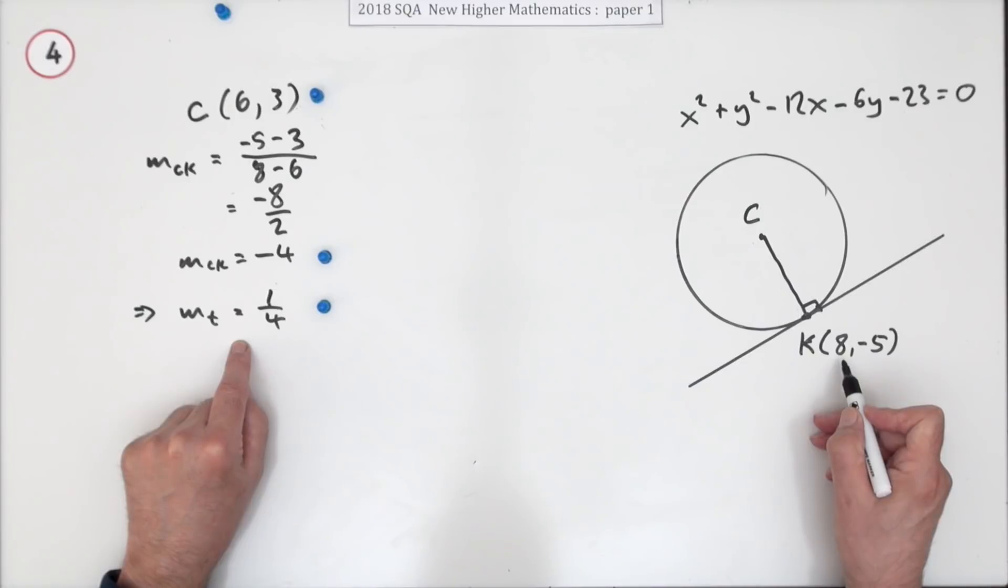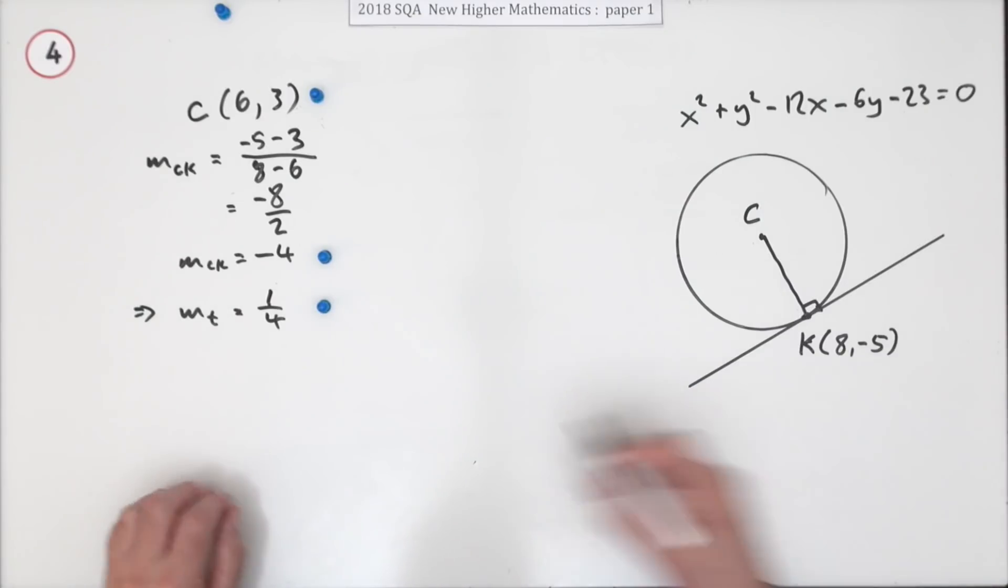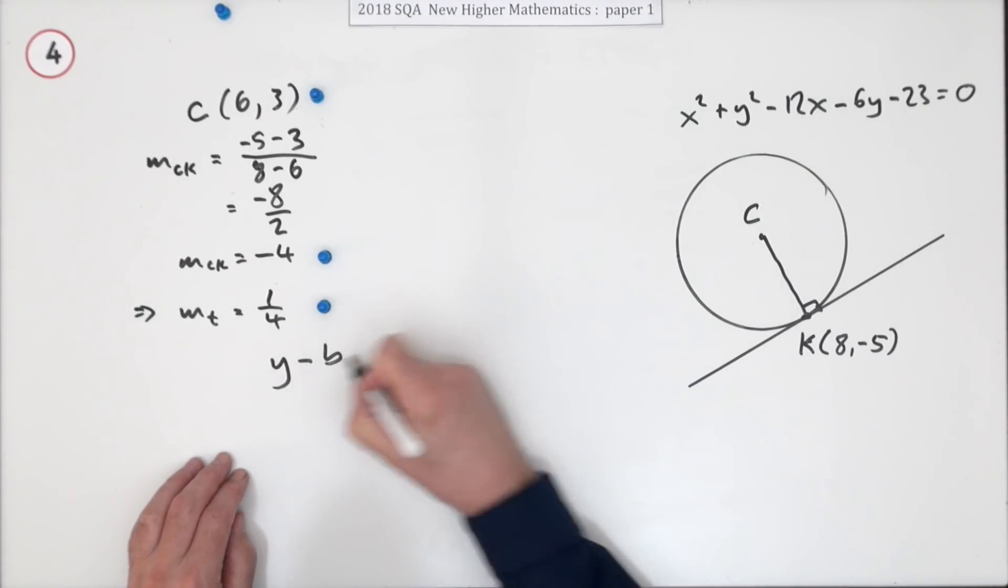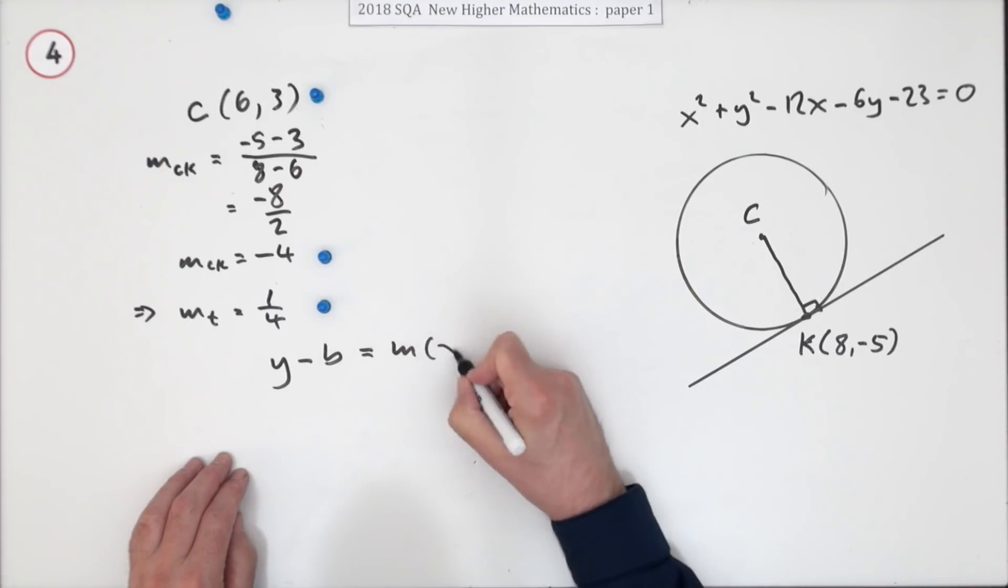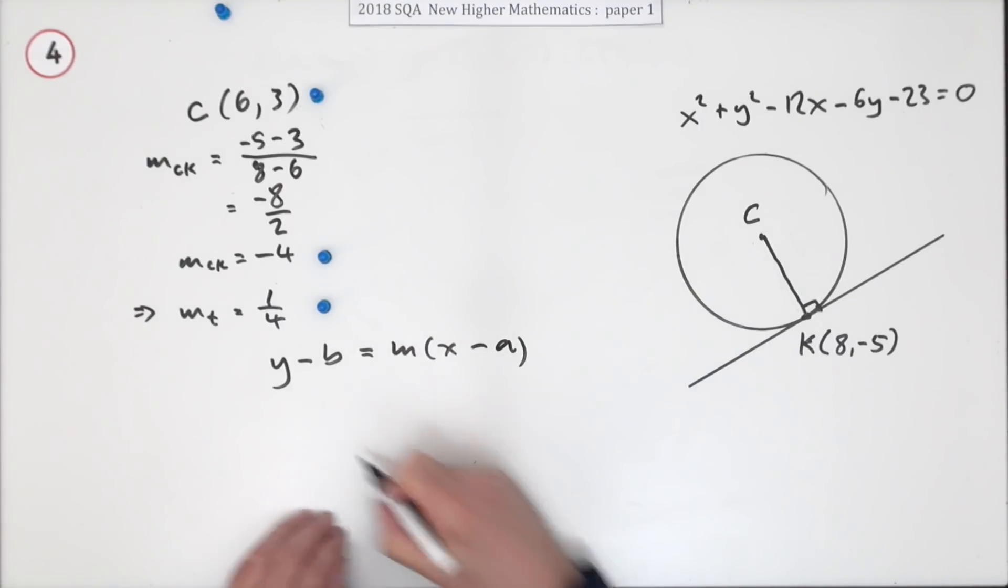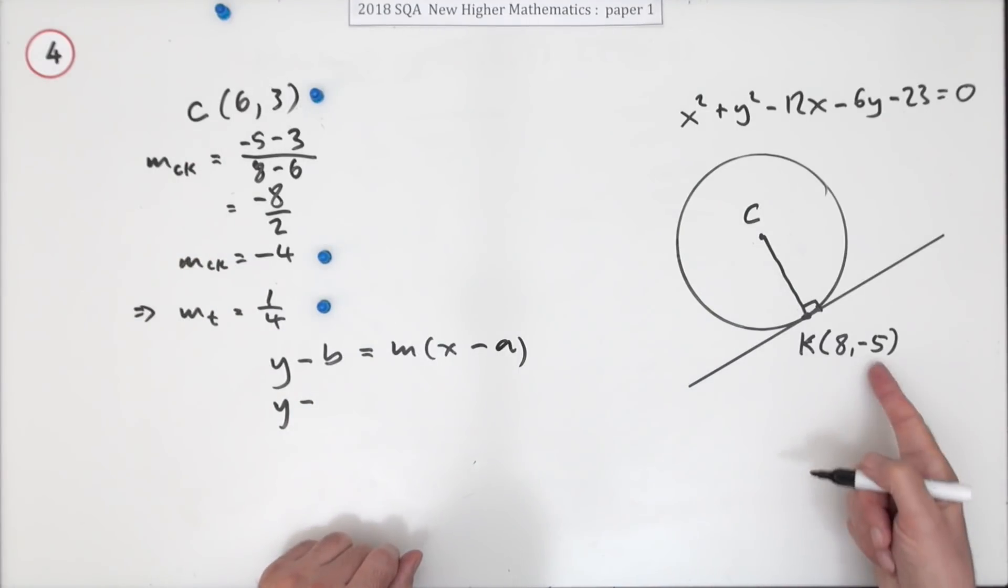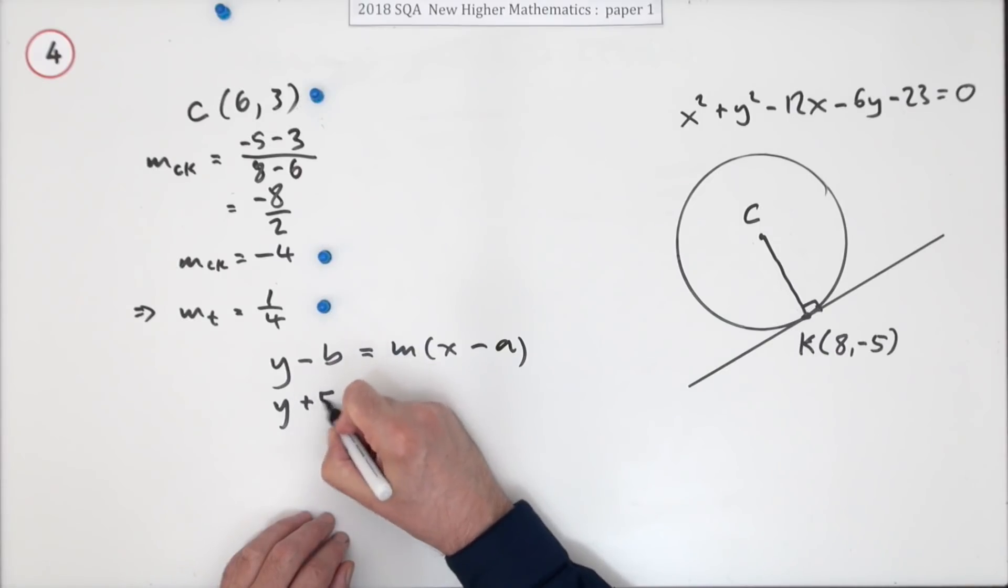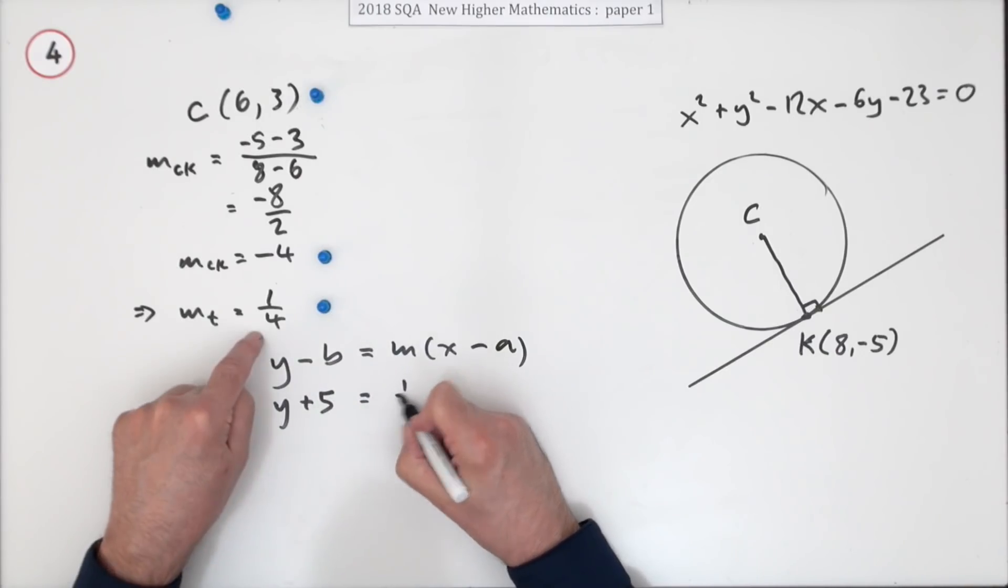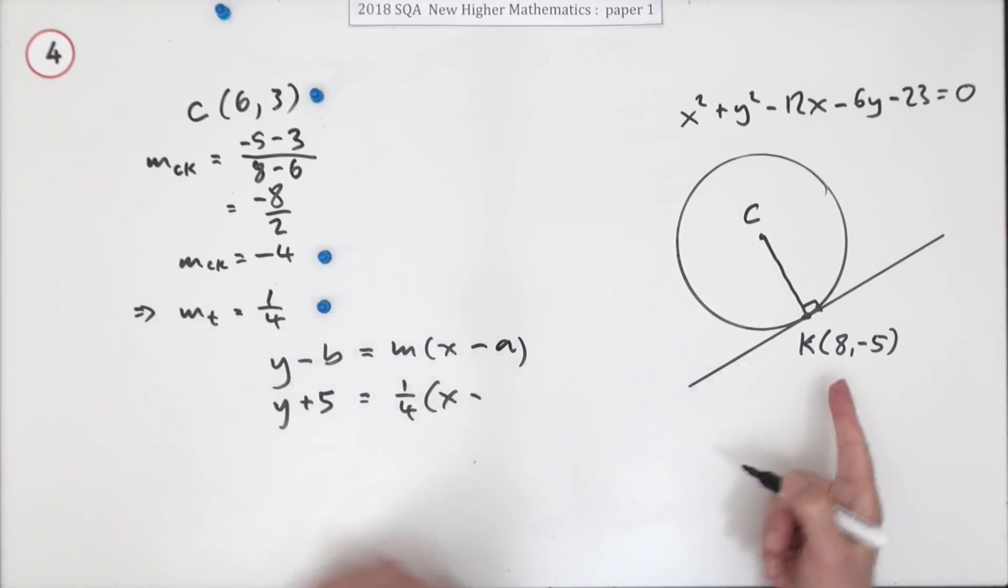Now let's just feed it all in. That's the point and that's the gradient. There's nothing special about that, so I'll just have to use the full thing. y - b is m(x - a). y minus the y-coordinate—remember it's this point, not the center, it's going through K—y minus the y-coordinate. We're going with a plus 5 is the gradient, a quarter, times x minus the x-coordinate, which is 8.